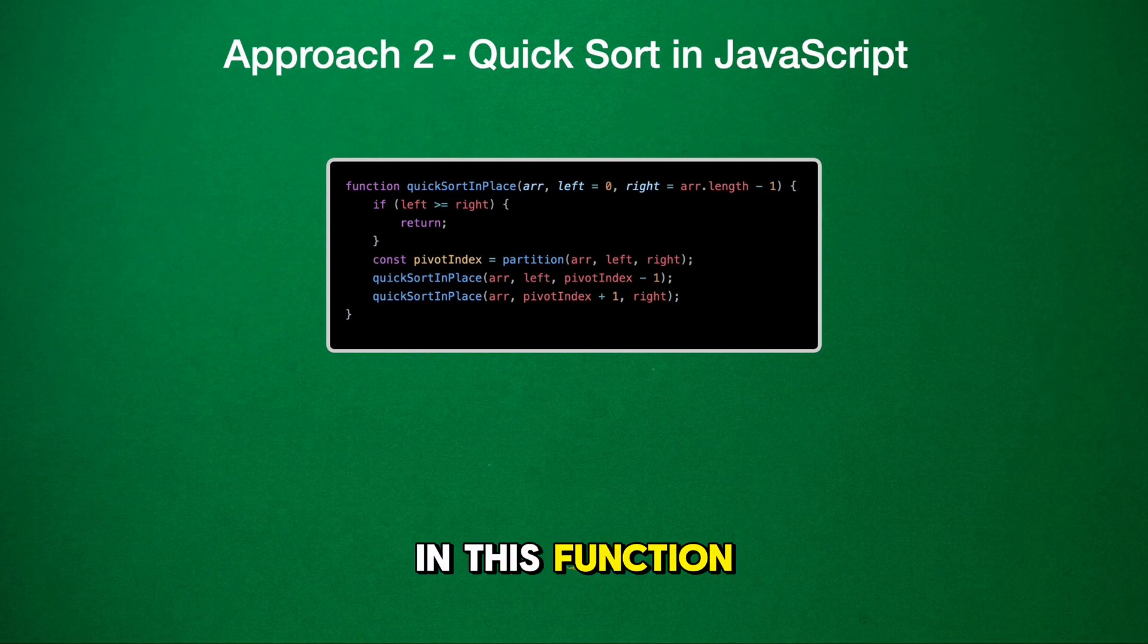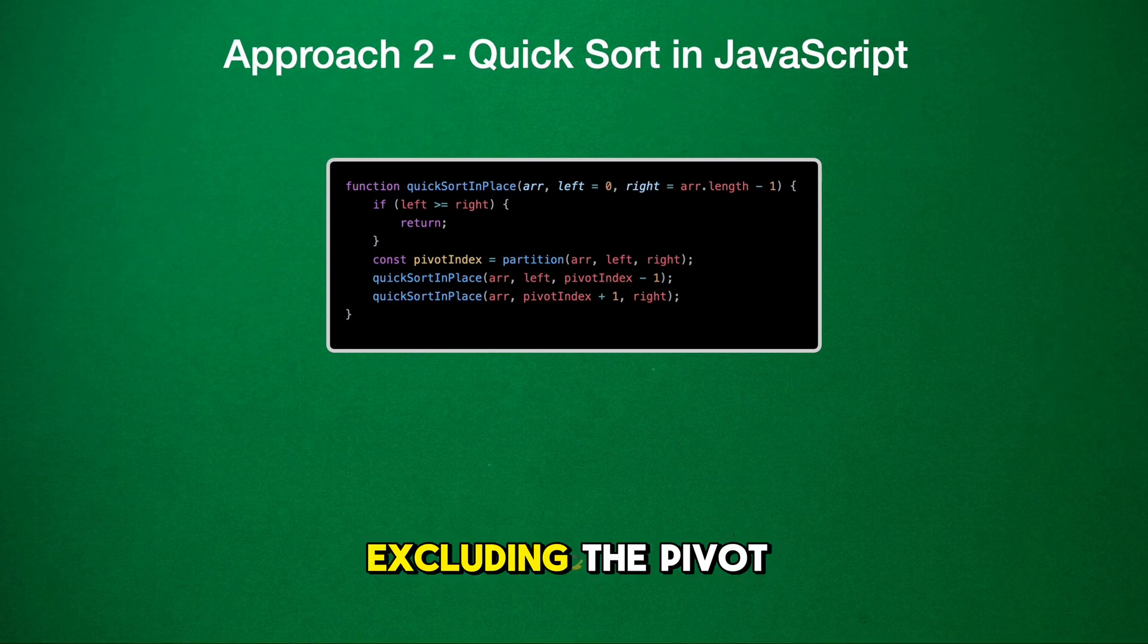In this function, the first thing we do is check if left is greater than or equal to right. If it is, we just return because it means there's nothing to sort, or we're down to a single element. The magic happens with the call to the partition function. That's where we choose a pivot and move all elements smaller than the pivot to its left and all larger elements to its right. Then, we recursively call quick sort in place on the subarrays to the left and right of the pivot, excluding the pivot itself since it's already in its final position.